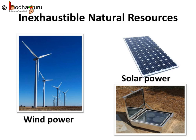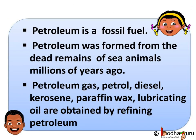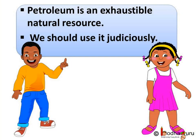In not so distant future, solar energy would also be used to run cars. Now you know about petroleum and its usage. To sum up: petroleum is a fossil fuel, formed from the dead remains of sea animals millions of years ago. Petroleum gas, petrol, diesel, kerosene, paraffin wax, and lubricating oil are obtained by refining petroleum. Like coal, petroleum is an exhaustible natural resource, which means only a limited supply is available. Hence, we should use it judiciously.